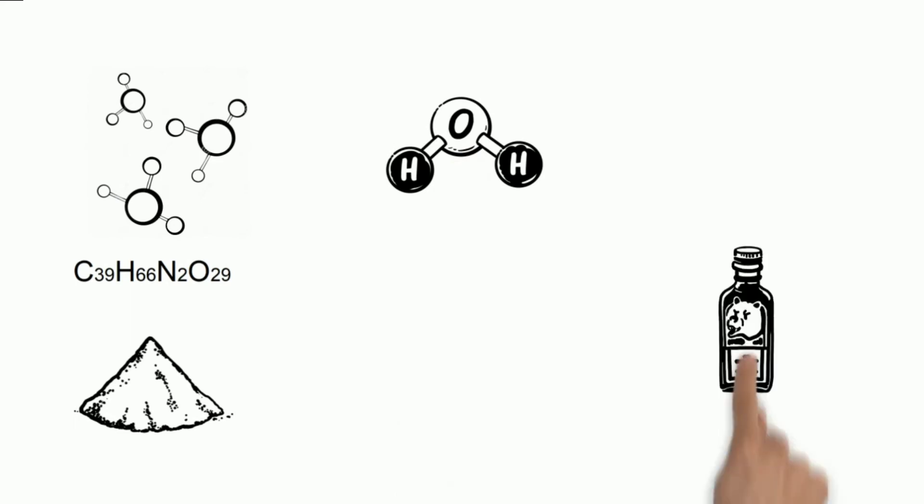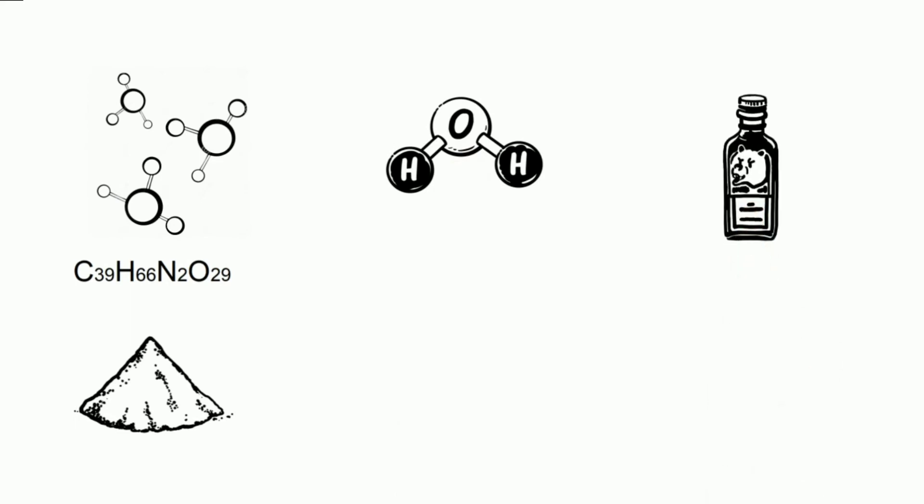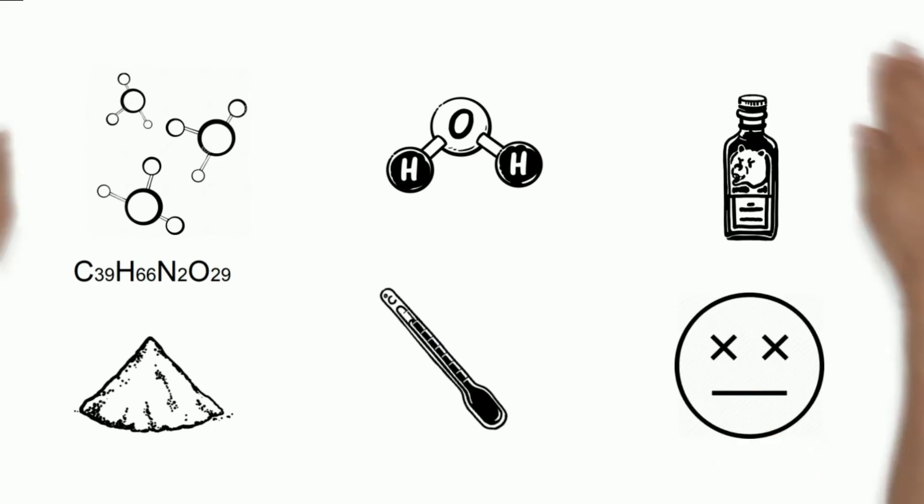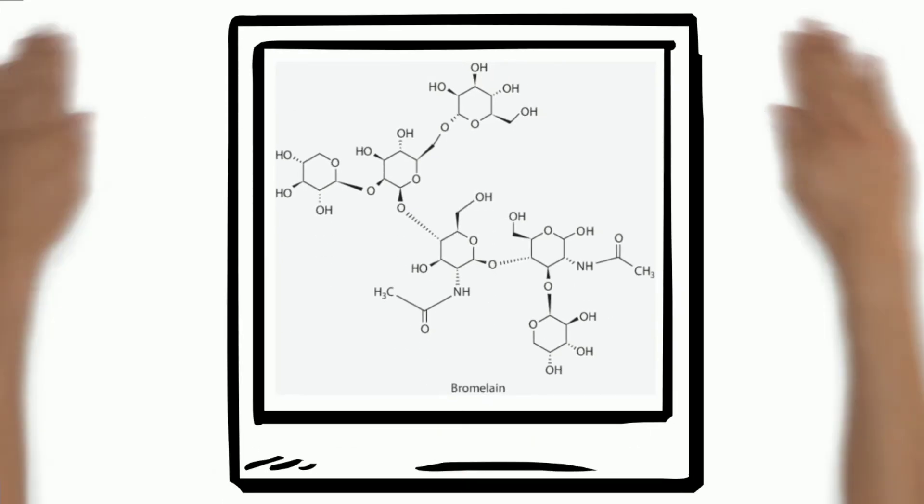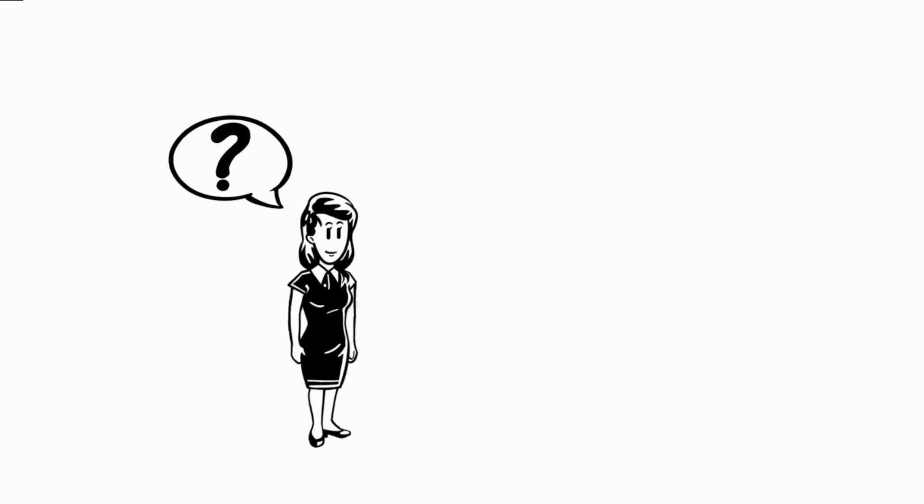The molecular formula for bromelain is C39H66N2O29. It is a white amorphous powder which is soluble in water but insoluble in alcohol, chloroform, and ether. Its optimal temperature range is generally 50 to 60 Celsius, and it can withstand a temperature of up to about 70 Celsius before inactivation occurs. This is the chemical structure of bromelain.